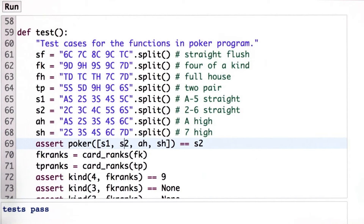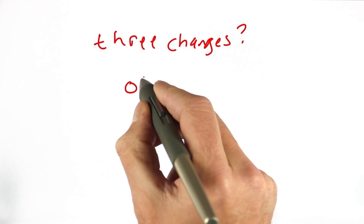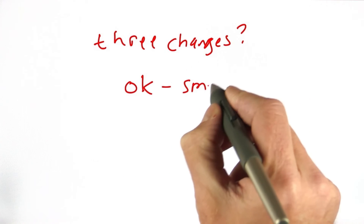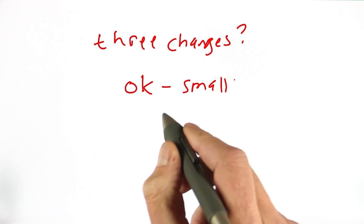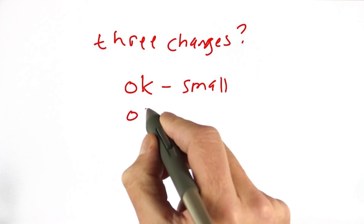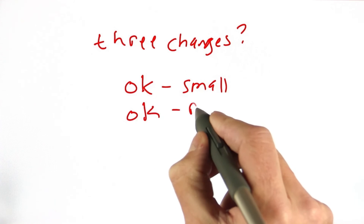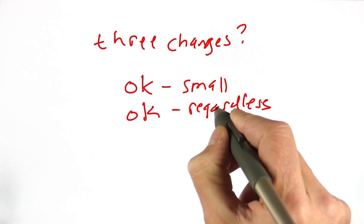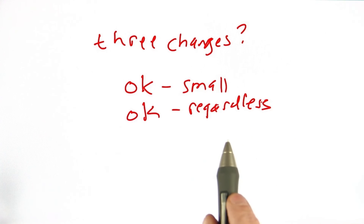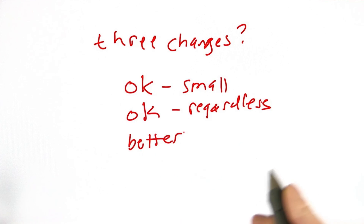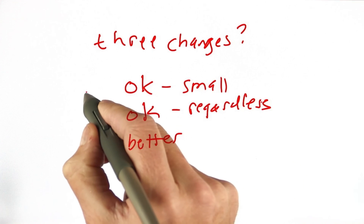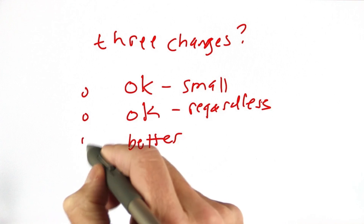What do you think about the prospects of making three changes? Would you say that's okay because the changes seem to be small ones to the three functions? Would you say it's okay regardless of the size of the change, if that's just the way it is and we have to put up with it? Or would you say we should be able to do better, and we should look for a solution that doesn't require changing all three functions? What would you vote for?